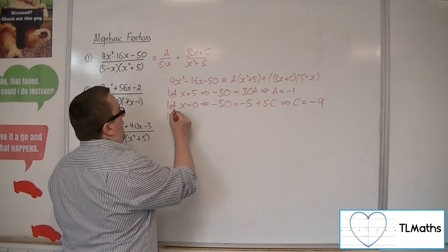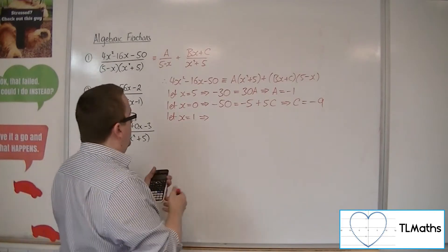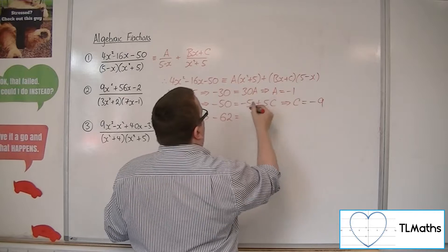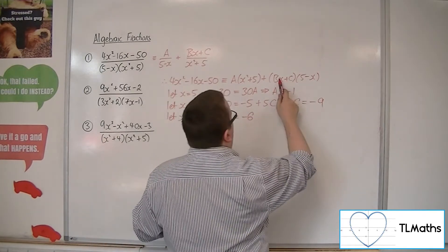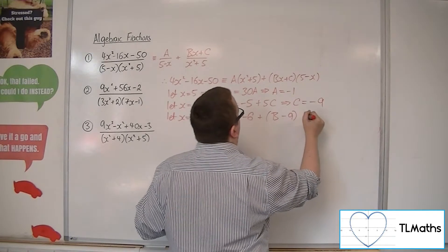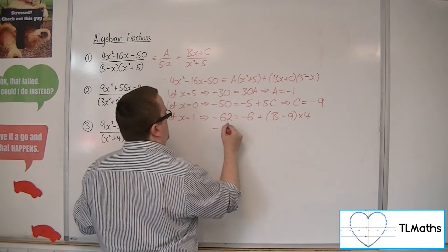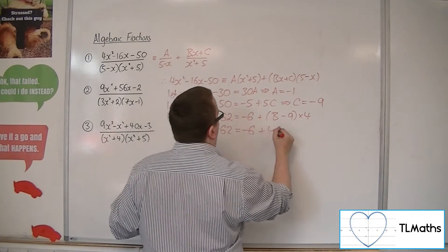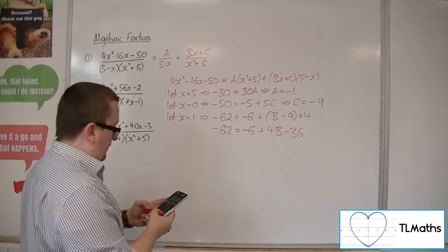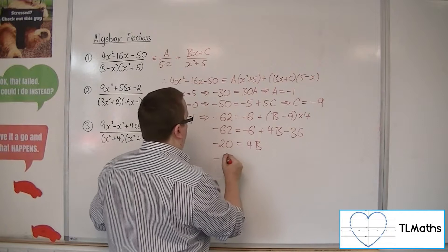Now choosing x equals 1: the left-hand side gives 4 minus 16 minus 50, which is minus 62. On the right, 1 plus 5 is 6, times a gives minus 6. Then (b minus 9) times (5 minus 1), so times 4, gives: minus 62 equals minus 6 plus 4b minus 36. Adding 6 and 36 to both sides gives minus 20 equals 4b, so b must be minus 5.